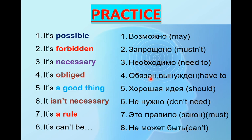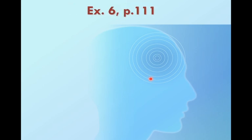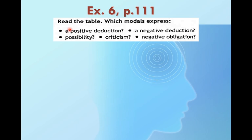It can't be — it can't. OK, let's work with the book. Open your books on page 111, exercise number six. Let's read the table — this table shows some meanings which these modal verbs can express. First of all: positive deduction — это позитивное умозаключение; negative deduction — отрицательное умозаключение.